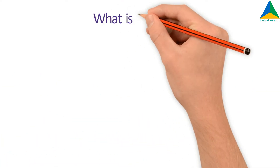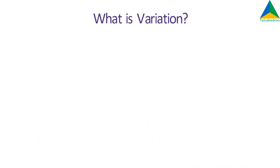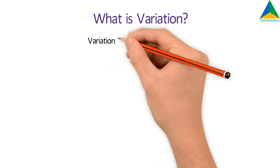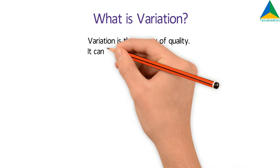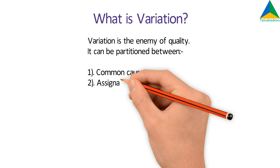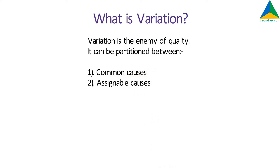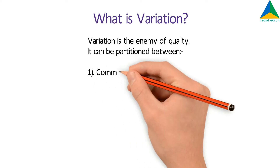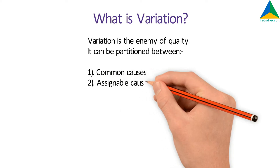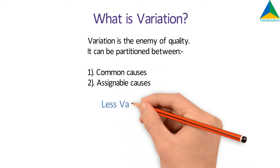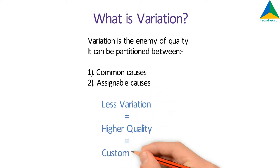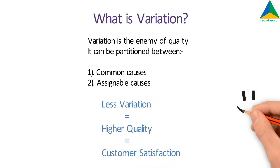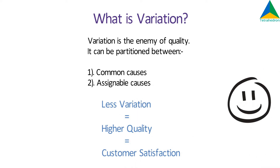What is Variation? Variation is the enemy of quality. It can be partitioned between common causes and assignable causes. Lesser the variation, higher is the quality, and higher quality results in customer satisfaction.